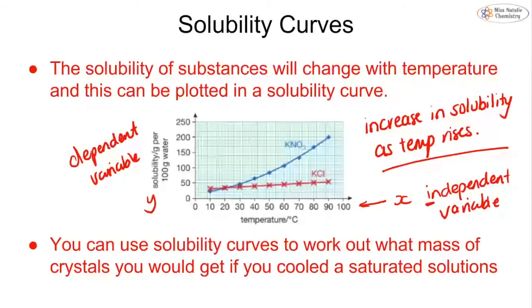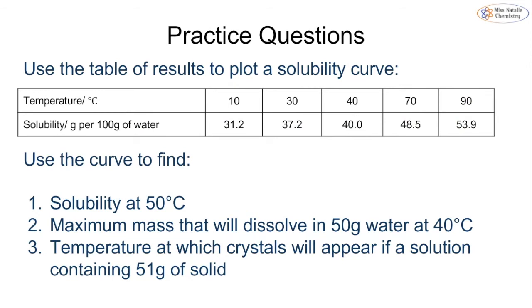We can work out what mass of crystals we would get if we cooled a saturated solution using a solubility curve. An example question would be given a table of results similar to this. Notice I've got temperatures of 10, 30, 40, 70, and 90 - they have purposely not given you equal temperatures. The reason for that is you're going to typically use your solubility curve to work out one of those missing values, but don't let that affect how you plot your graph.